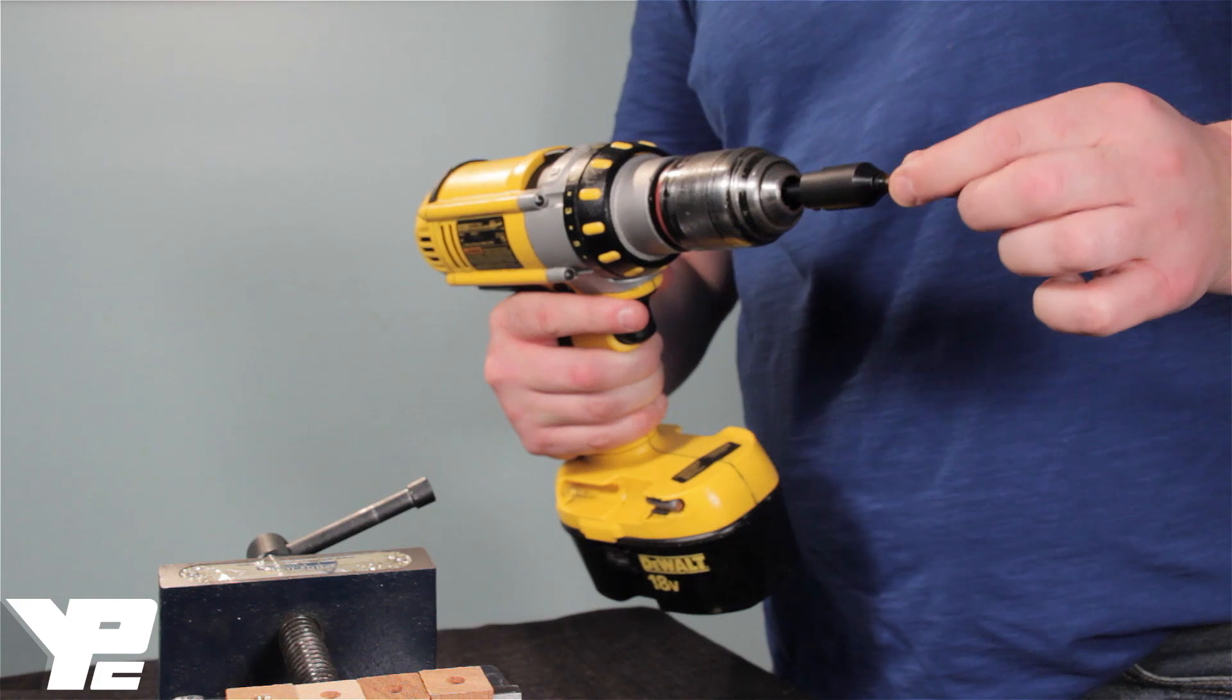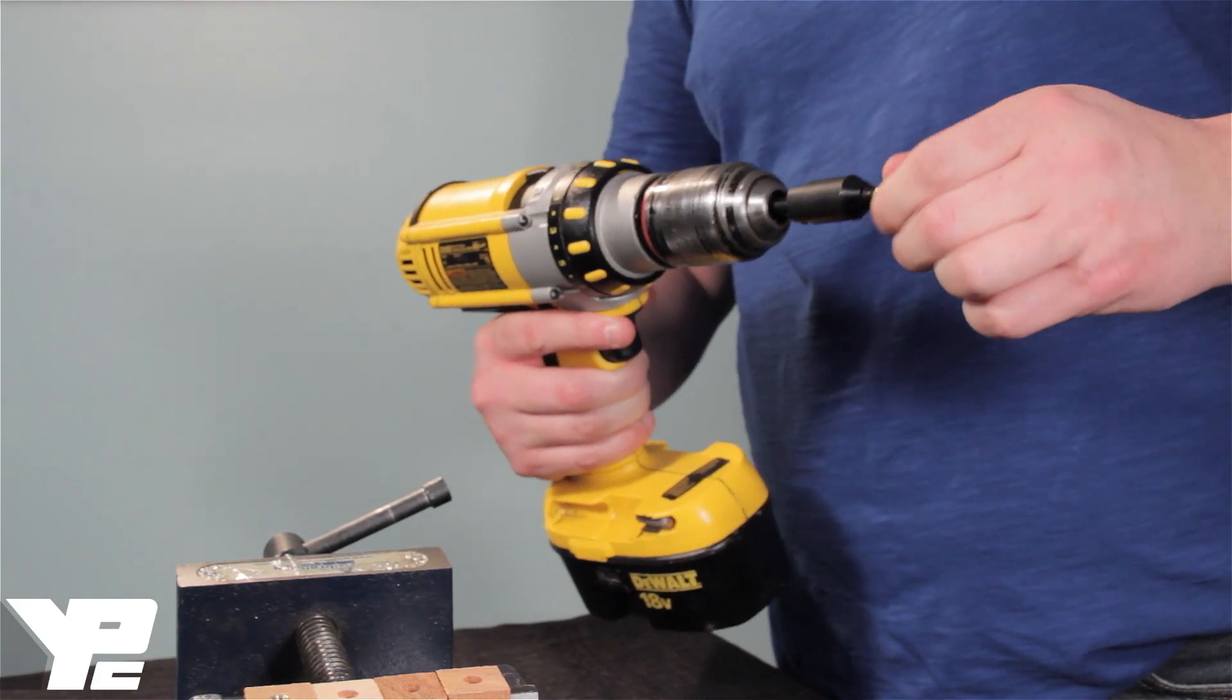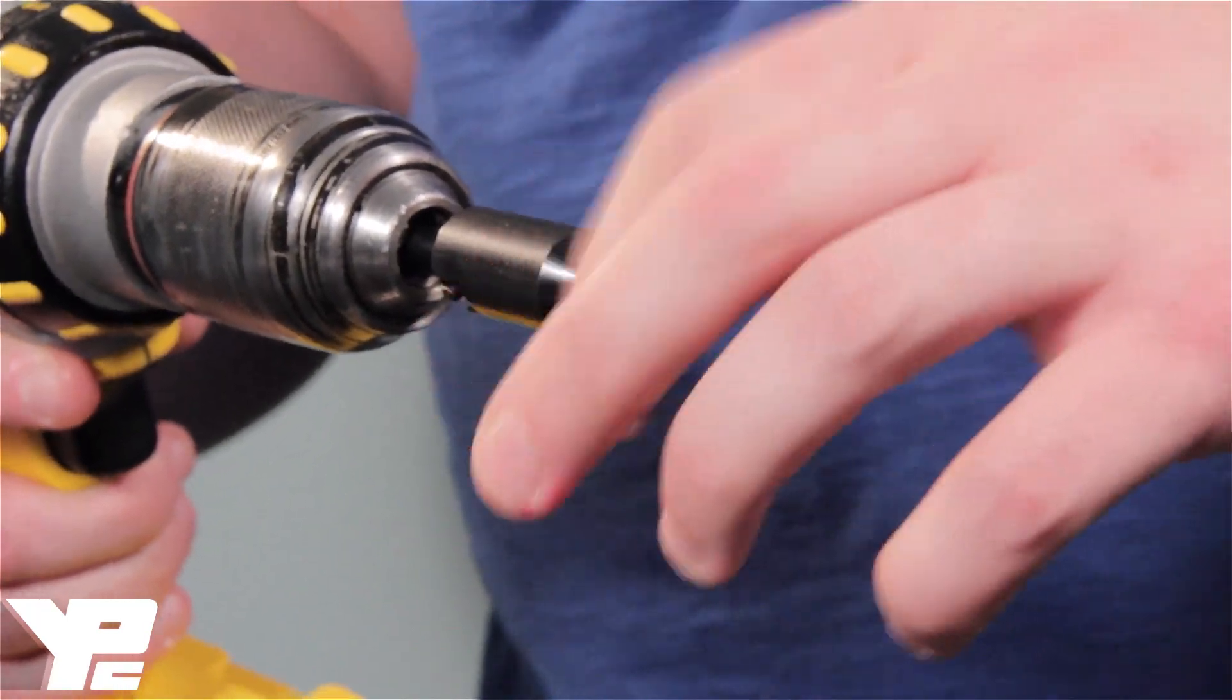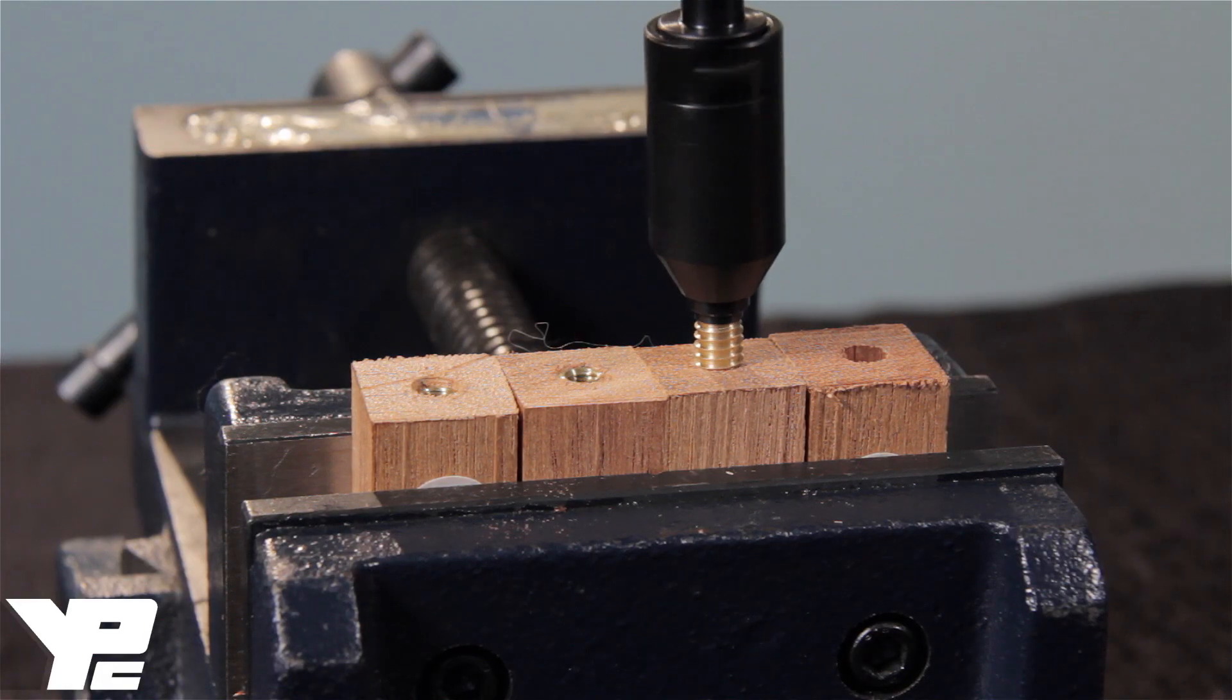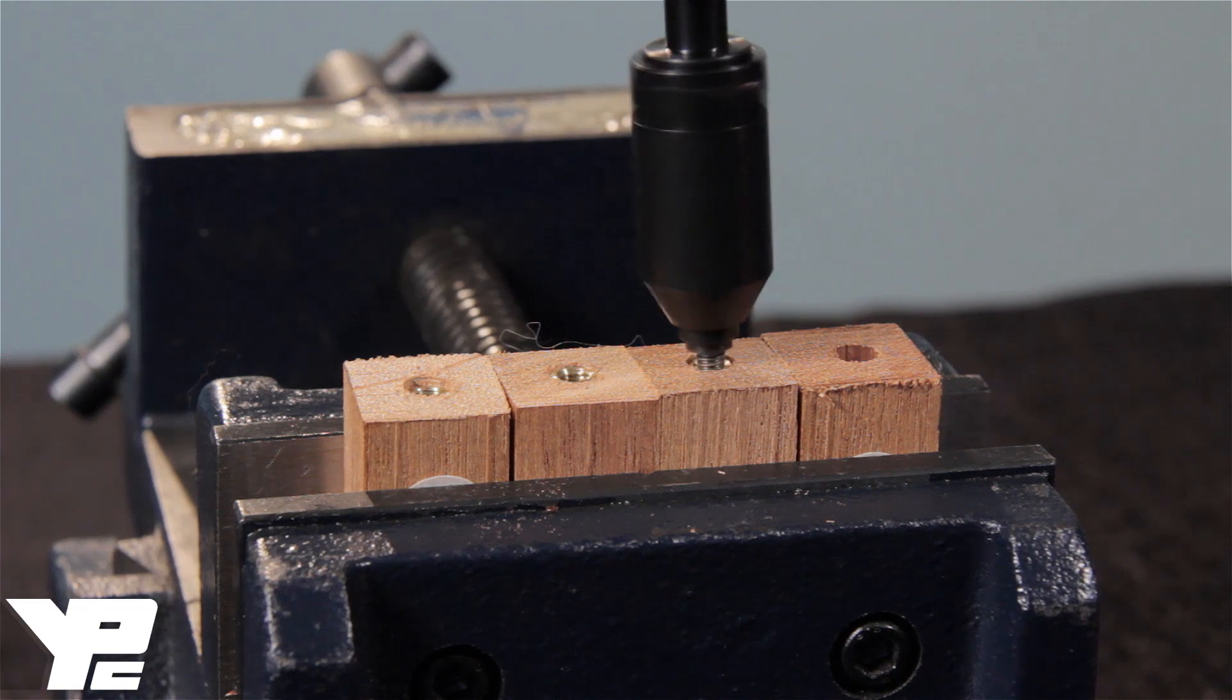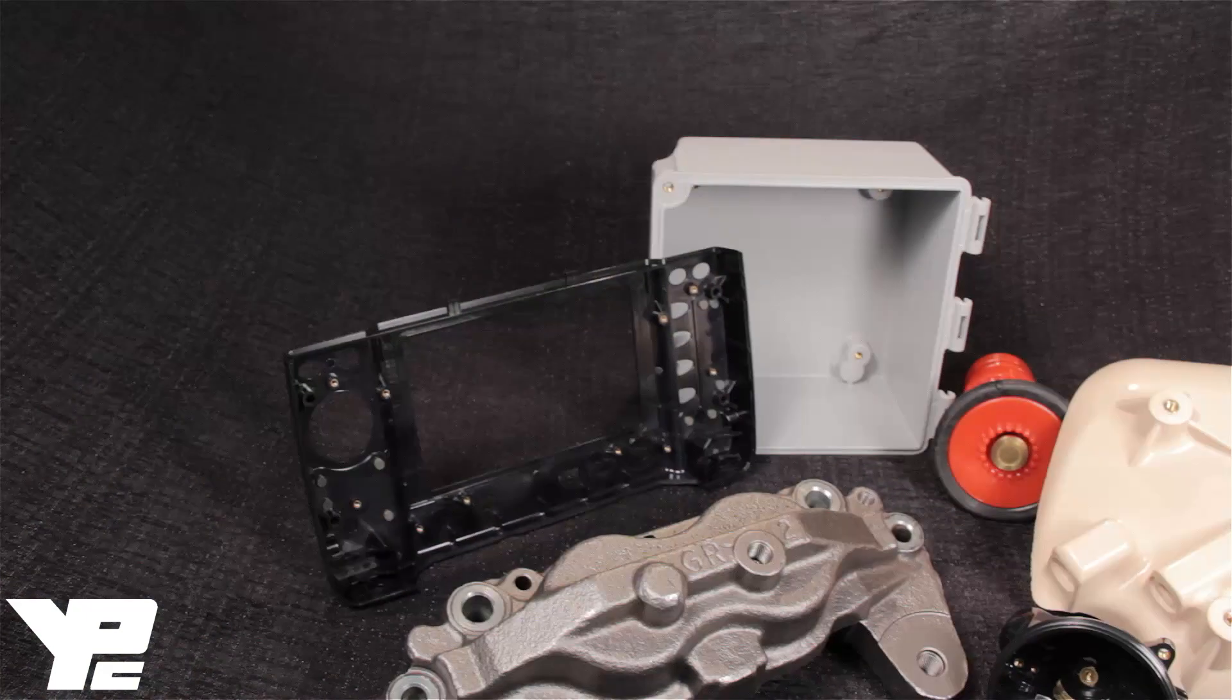Next, thread the insert onto the drill head and install into wood. Drill forward until the insert is put in place. Then, drill in reverse to remove the tool and ensure a tight fit.